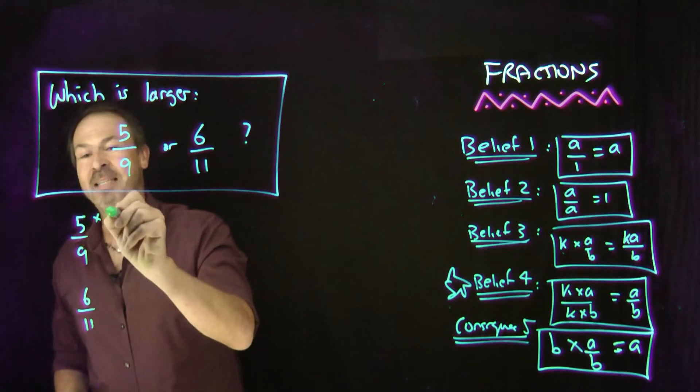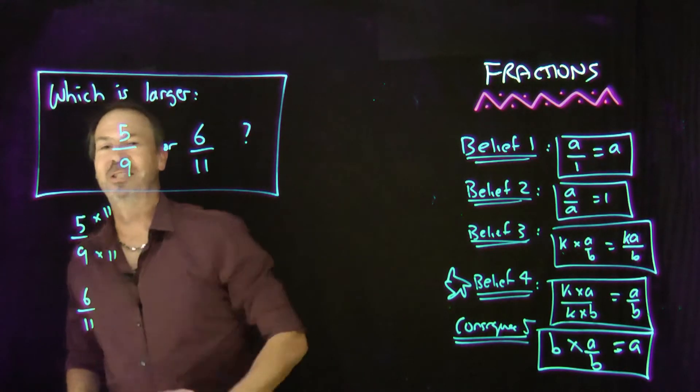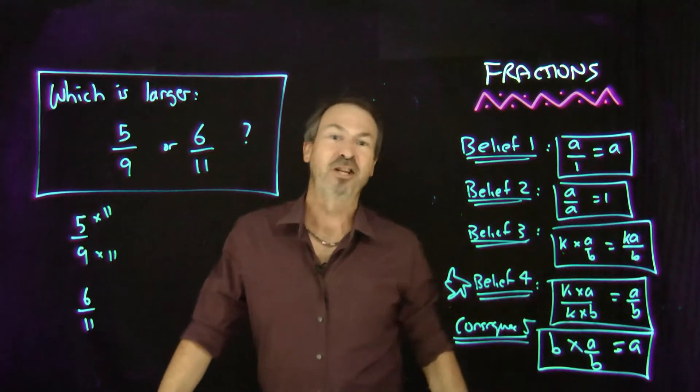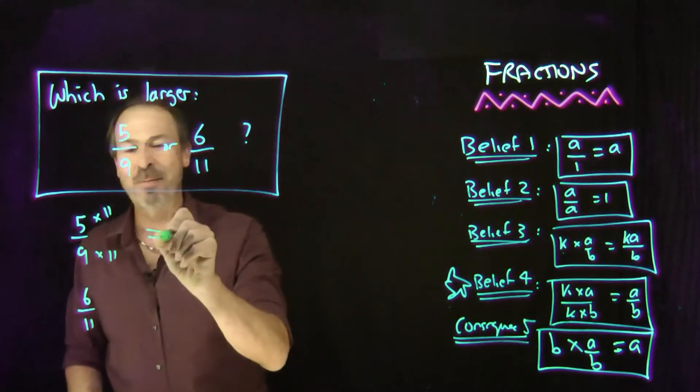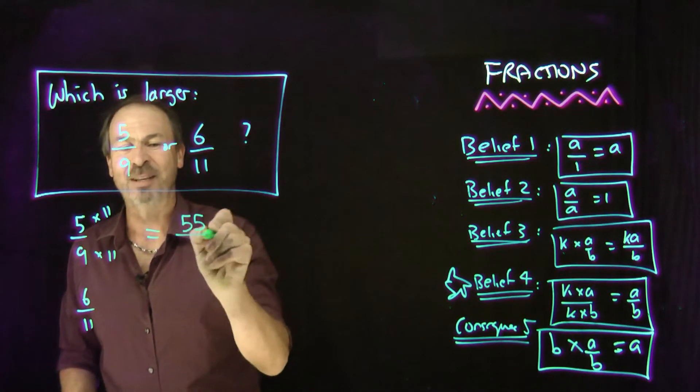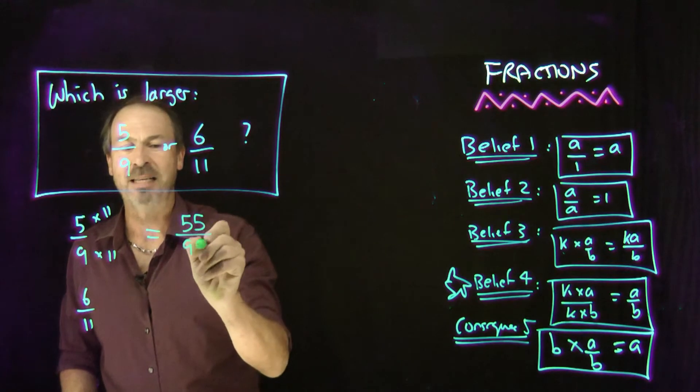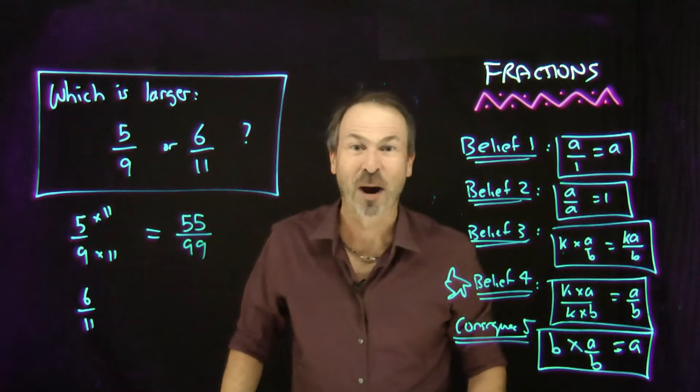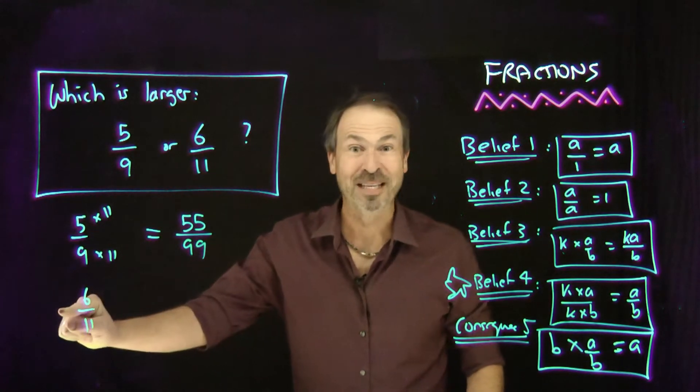I'm going to scale the number of pies up by 11 and scale the number of students up by 11. By belief number 4, that changes nothing. That's the same amount of pie per student, but now I see it's really the same as 55 pies for 99 students. That seems crazy until you realize what I'm about to do to this one.